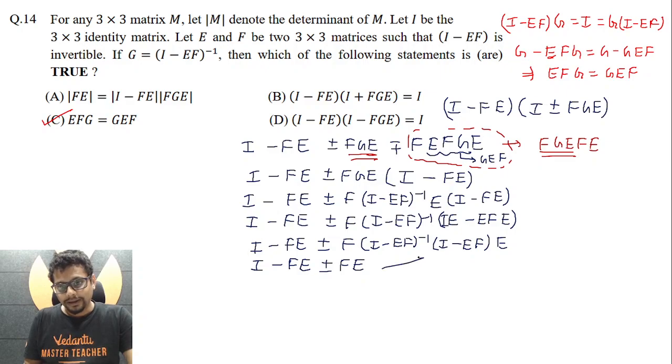So clearly when you take plus, then you are getting identity matrix. When you are taking minus we are essentially getting I minus two FE and not necessarily identity matrix. So that essentially means B is correct. When we take plus we get identity matrix. However with minus it's not so. So B is correct, D is incorrect.